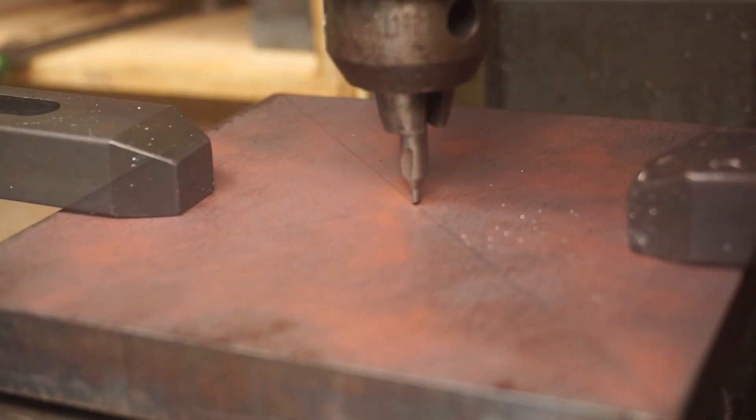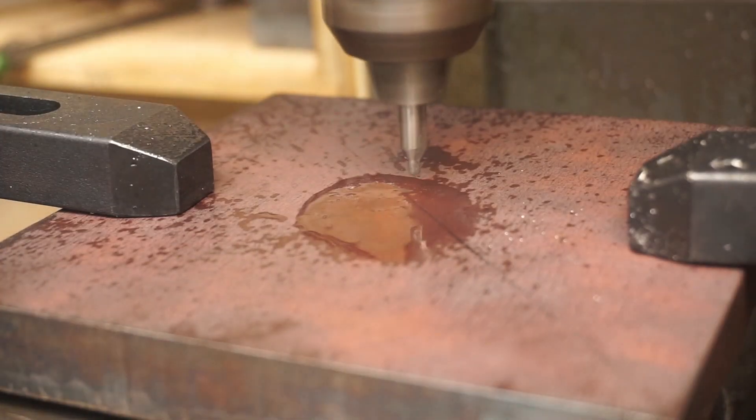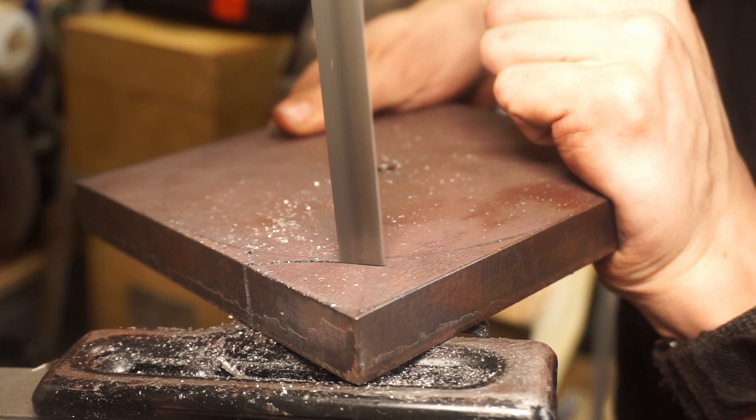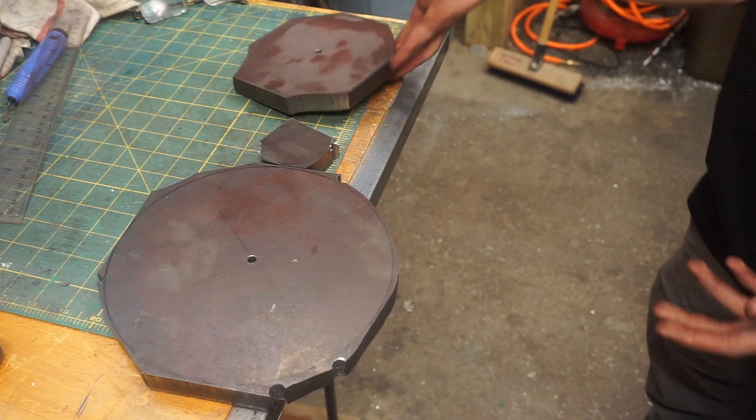Just like the other wheel, I'll bore a hole down the middle. And I'll roughly cut out the circle's perimeter. Here's all the circle blanks, ready to be turned into circles.